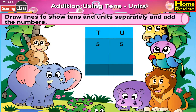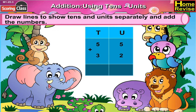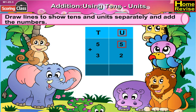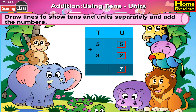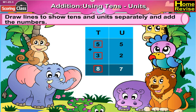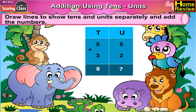Next is 55 plus 32. We will draw a line between 55 and 32. Write units above 5 and 2 and tenths above 5 and 3. 5 plus 2 is 7, 5 plus 3 is 8. So 55 plus 32 is 87.